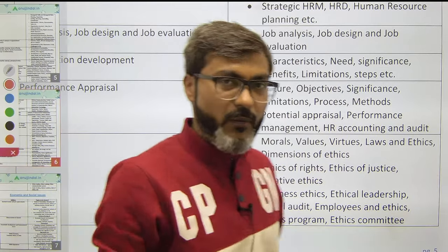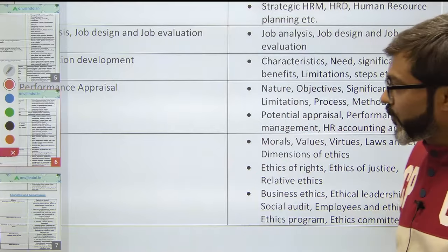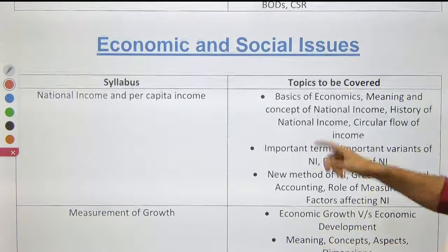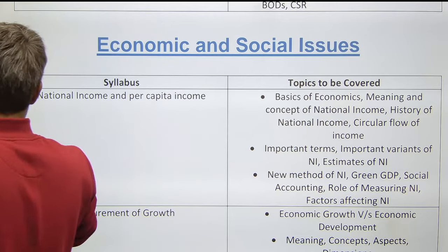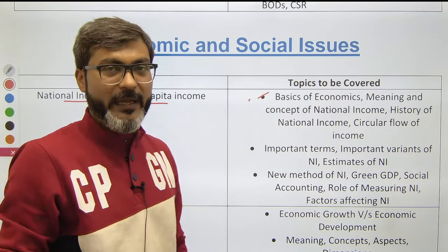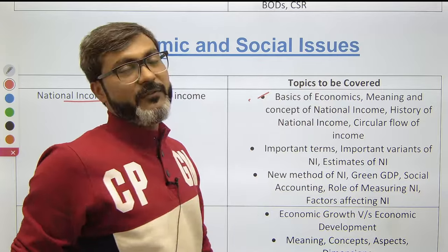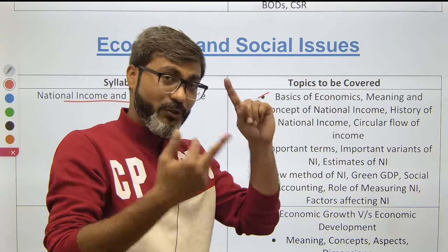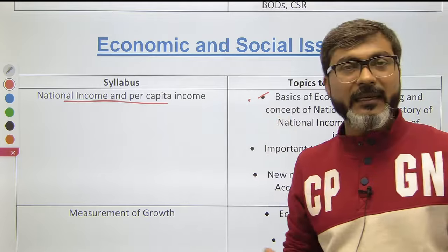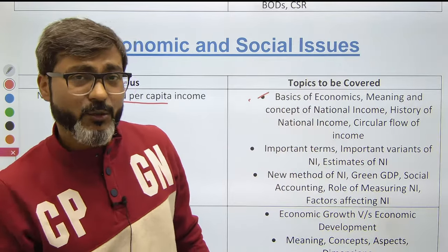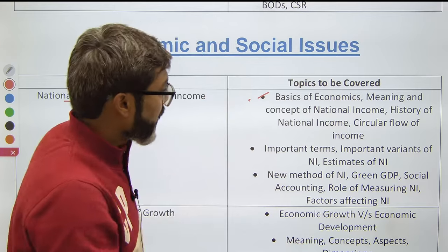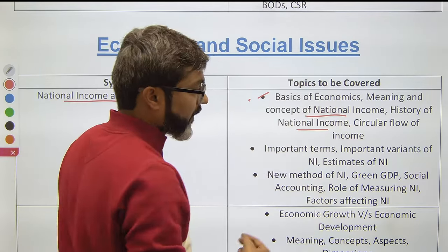For every part of the syllabus I have mentioned the subtopics you need to cover for RBI Grade B 2024 — the downloadable PDF is in the description. Moving to ESI (Economic and Social Issues): RBI mentions national income and per capita income, but you first need the basics of economics — what is microeconomics and macroeconomics — before you can understand national income. Then cover meaning, concept, history, circular flow of income, important terms and variants of national income, estimation methods, green GDP, social accounting, and factors affecting national income.